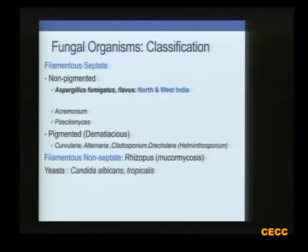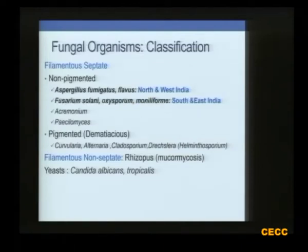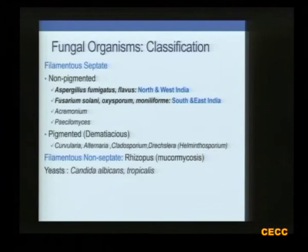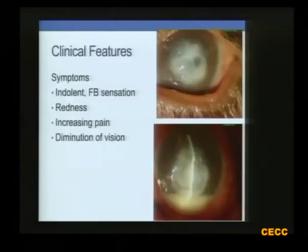For instance, in North and West India it is Aspergillus which is the commonest organism, but for South and East India it is Fusarium which is the commonest, and these organisms are susceptible to different antifungal agents.